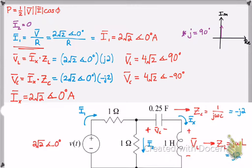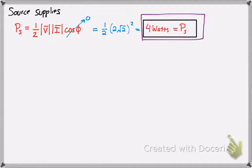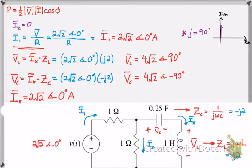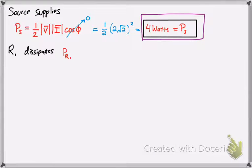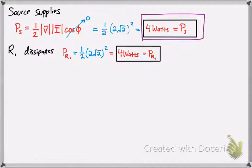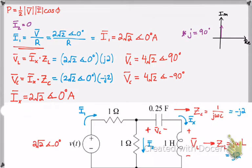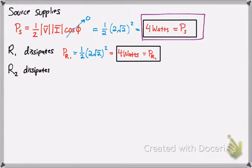Each component dissipates power, so we're going to calculate how much. For R1, the first resistor, we use the same formula: one-half times 2 radical 2 times 2 radical 2 equals 4 watts. R2 dissipates nothing because it's short-circuited. R2 is the resistor in parallel. Since no current flows through it, there's no power dissipated.